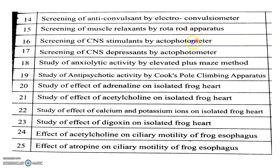Experiment fourteen is the screening of anticonvulsants by electroconvulsiometer, to study anticonvulsant drugs on animals. Experiment fifteen is muscle relaxants by rotarod apparatus. Sixteen is CNS stimulants using a actophotometer; seventeen is CNS depressants using the same actophotometer. Experiment eighteen is anxiolytic activity by the elevated plus maze method. Nineteen is antipsychotic activity using the catalepsy clamping apparatus. Experiments twenty, twenty-one, twenty-two, and twenty-three all depend on frog heart. Experiments twenty-four and twenty-five cover ciliary motility on esophagus using different drugs, including choline and atropine.